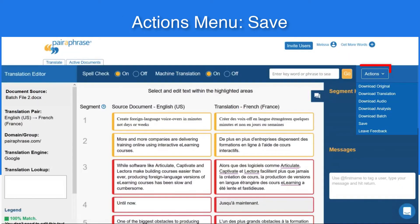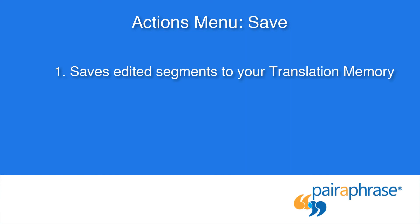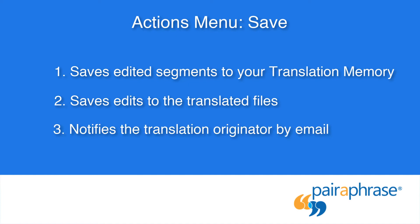When you're finished editing, go to the Actions tab and click Save. Clicking Save does three things: one, it saves edited segments to your translation memory; two, it saves edits to the translated files; and three, it sends an email to the translation originator to let them know you've finished reviewing and editing the files.